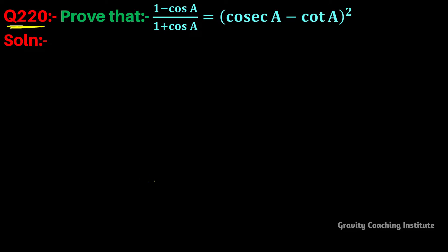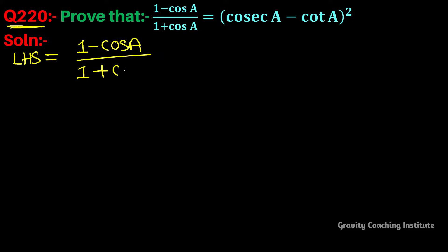Question number 220: Prove that (1 - cos A) / (1 + cos A) = (cosec A - cot A)². So here LHS is equal to (1 - cos A) / (1 + cos A).